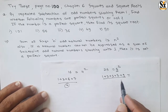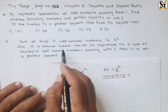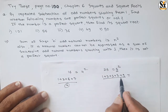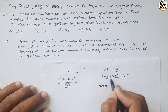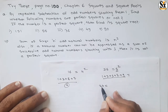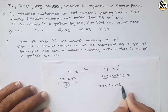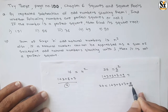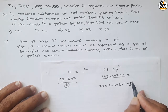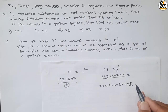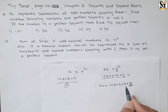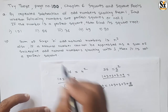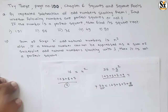Similarly, 25 is the square of 5: 1 + 3 + 5 + 7 + 9 = 25. Reversely, if a number cannot be expressed as the sum of successive odd numbers starting with 1, it is not a perfect square. For example, 24 cannot be expressed this way because 1 + 3 + 5 + 8 requires 8, which is not odd.